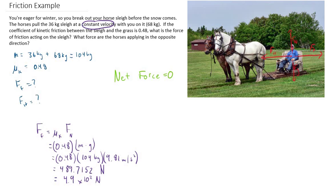So the force of friction is equal to the force of the horses. We can answer by saying both the horses and friction are applying forces of 4.9 times 10² newtons to the sleigh.